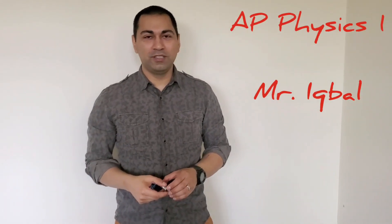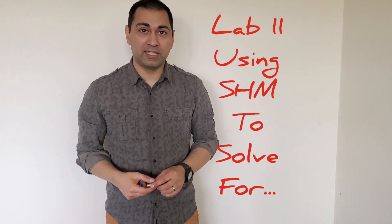Hey, welcome back to AP Physics 1. We're going to be doing lab 11, which is to find the spring constant k, and we're going to look at the spring constant of this spring right here. There's going to be three different methods to do it.